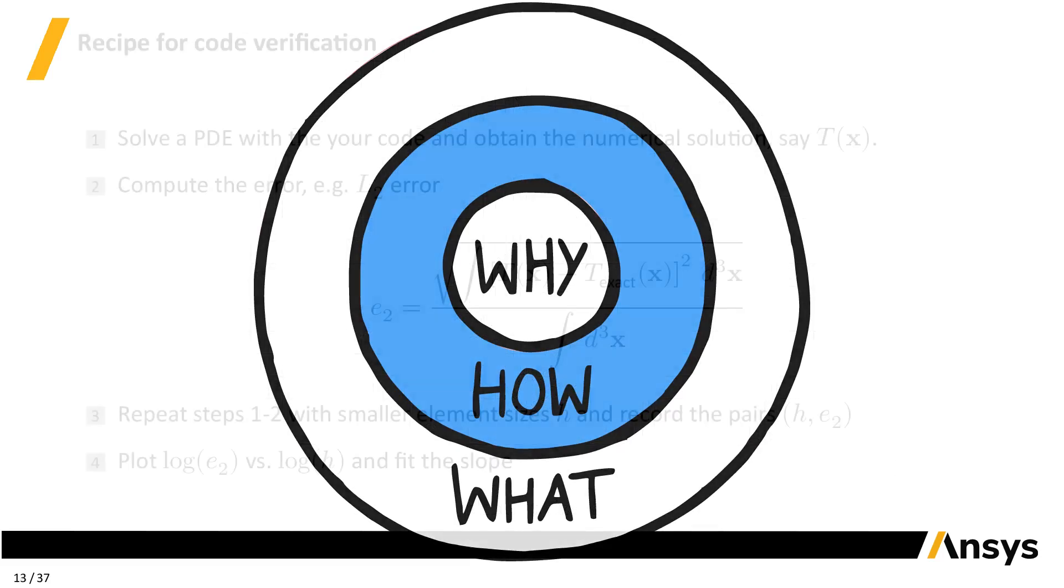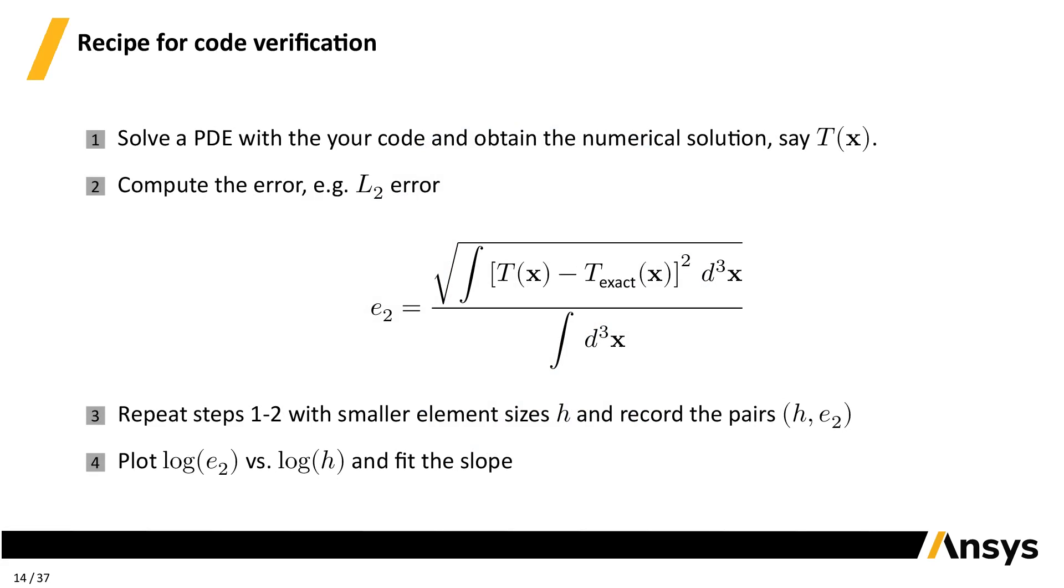Now let's go back to how. So far, so good. Let's recap and write down a recipe to perform code verification. 1. Solve a PDE with the code you're verifying. 2. Compute a measure of the error with respect to the exact solution. A popular choice here is the L2 error. 3. Repeat for smaller element sizes and record the pairs mesh size and error. 4. Once you have enough data points, make a log-log plot and fit the slope. If it matches the theory, then your code is verified, right?